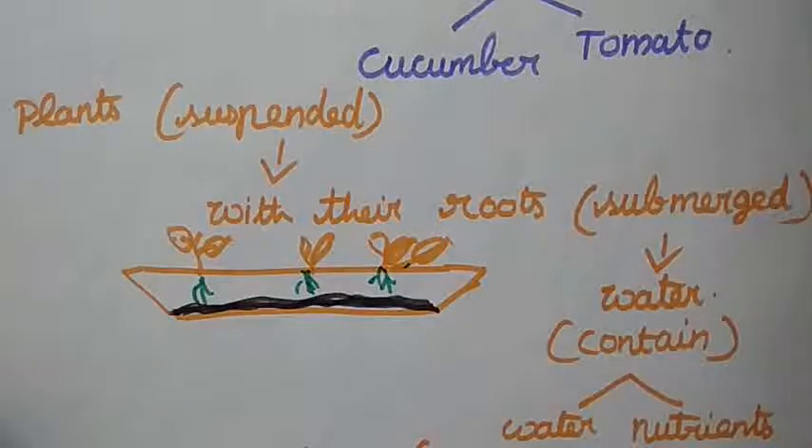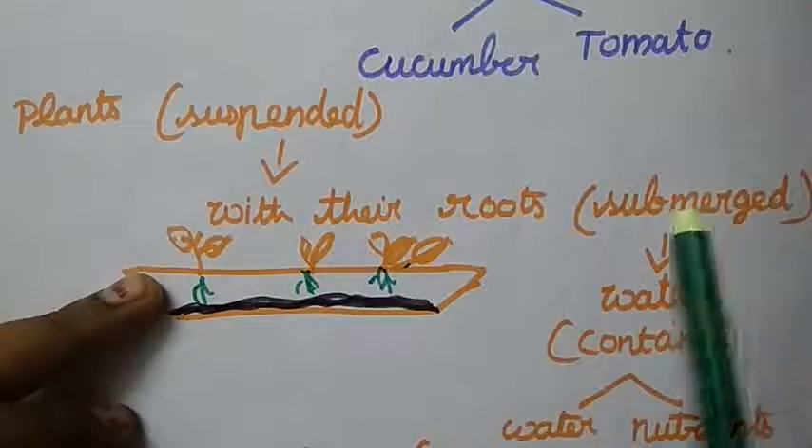Here plants are suspended with their roots submerged in the water containing water and nutrition. Here just see this, the plants are suspended with their roots submerged. This is the water, they are container with water and nutrients. This water is mixing nutrition and mineral, so they are helpful for the growing purpose of plants.